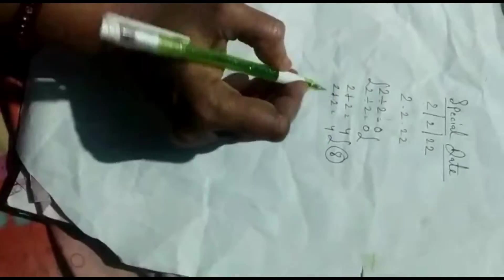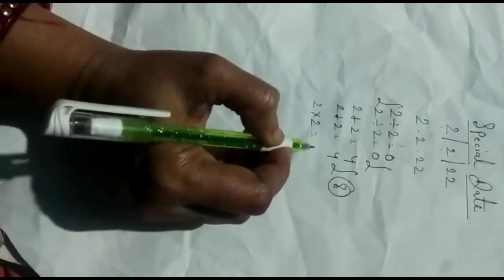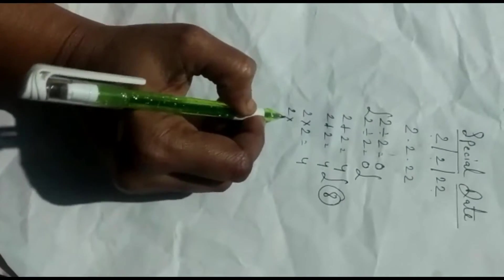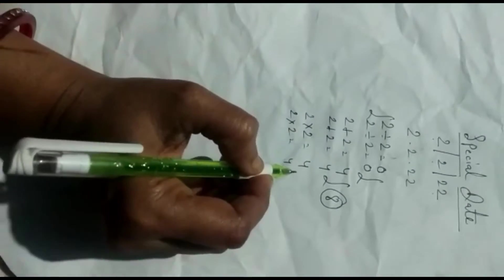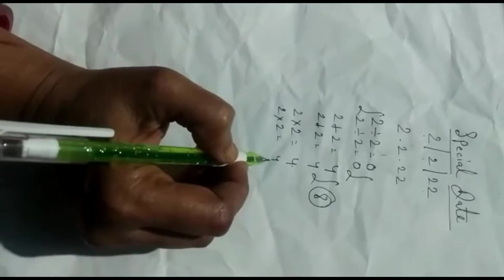We will do same number 3. Now, we will multiply this. 2 into 2 is equal to 4. 2 into 2 is equal to 4. 4 and 4, we will plus this.